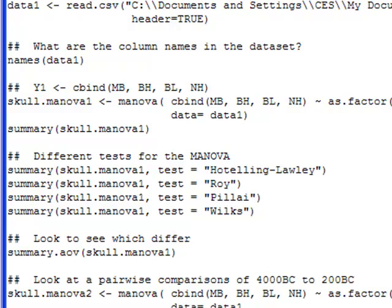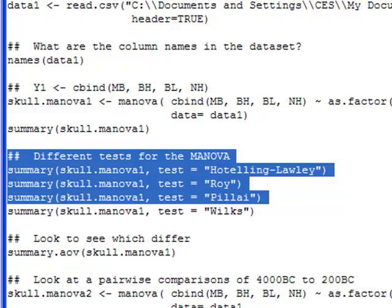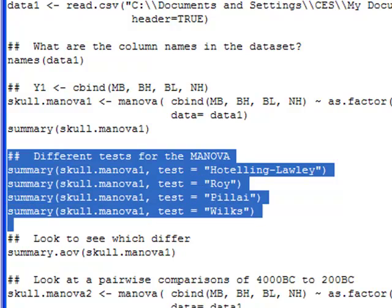So you may want to do a different type of test. Maybe you don't want to use Pillai. There are a variety of tests. There's Hotelling-Lawley, Roy, Pillai, Wilks. And you can specify in R which one you want to do but you specify it in the summary statement. And below here I have examples of how you would set these up. I'm going to run them all at once just so you know that they work.